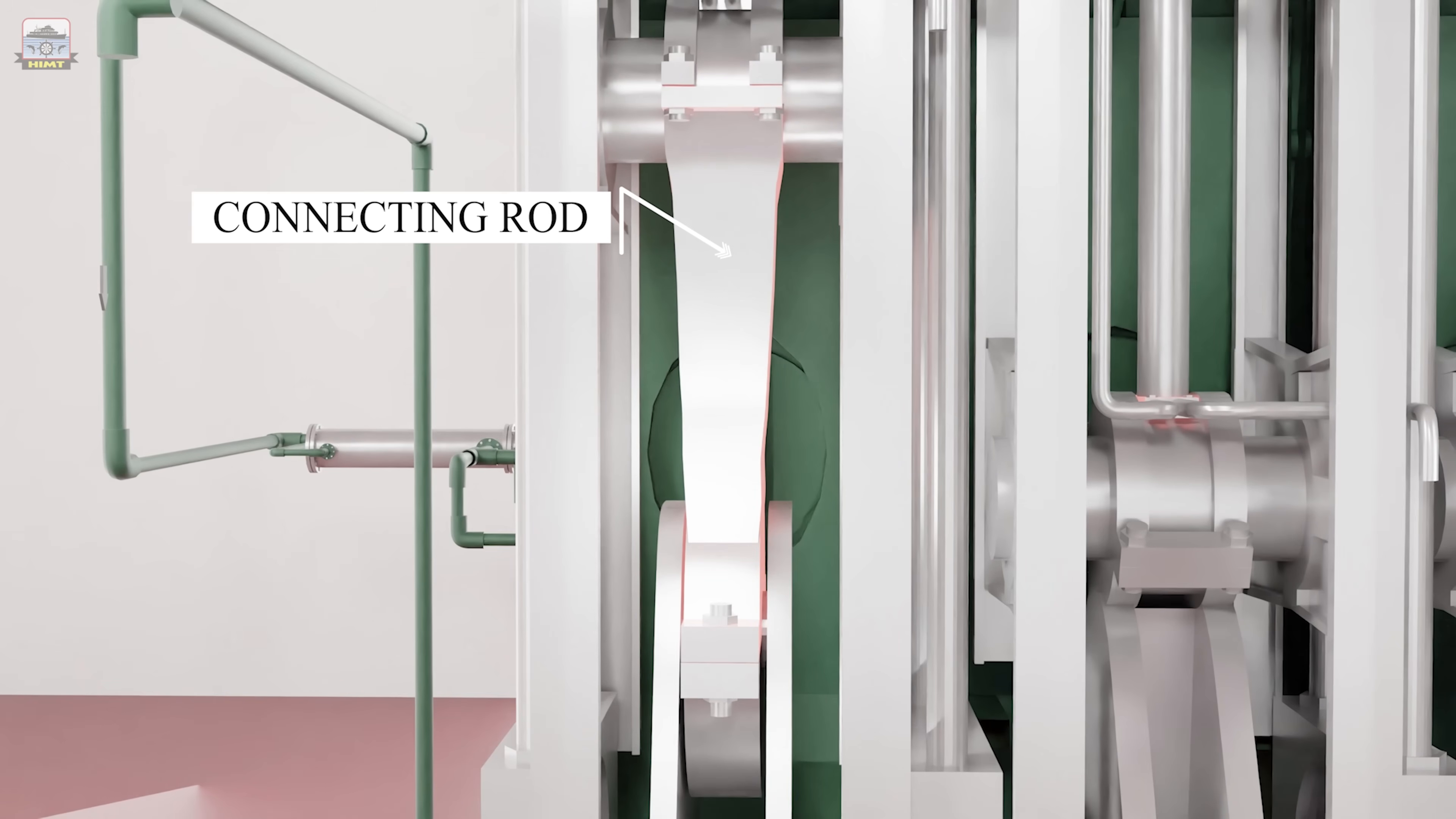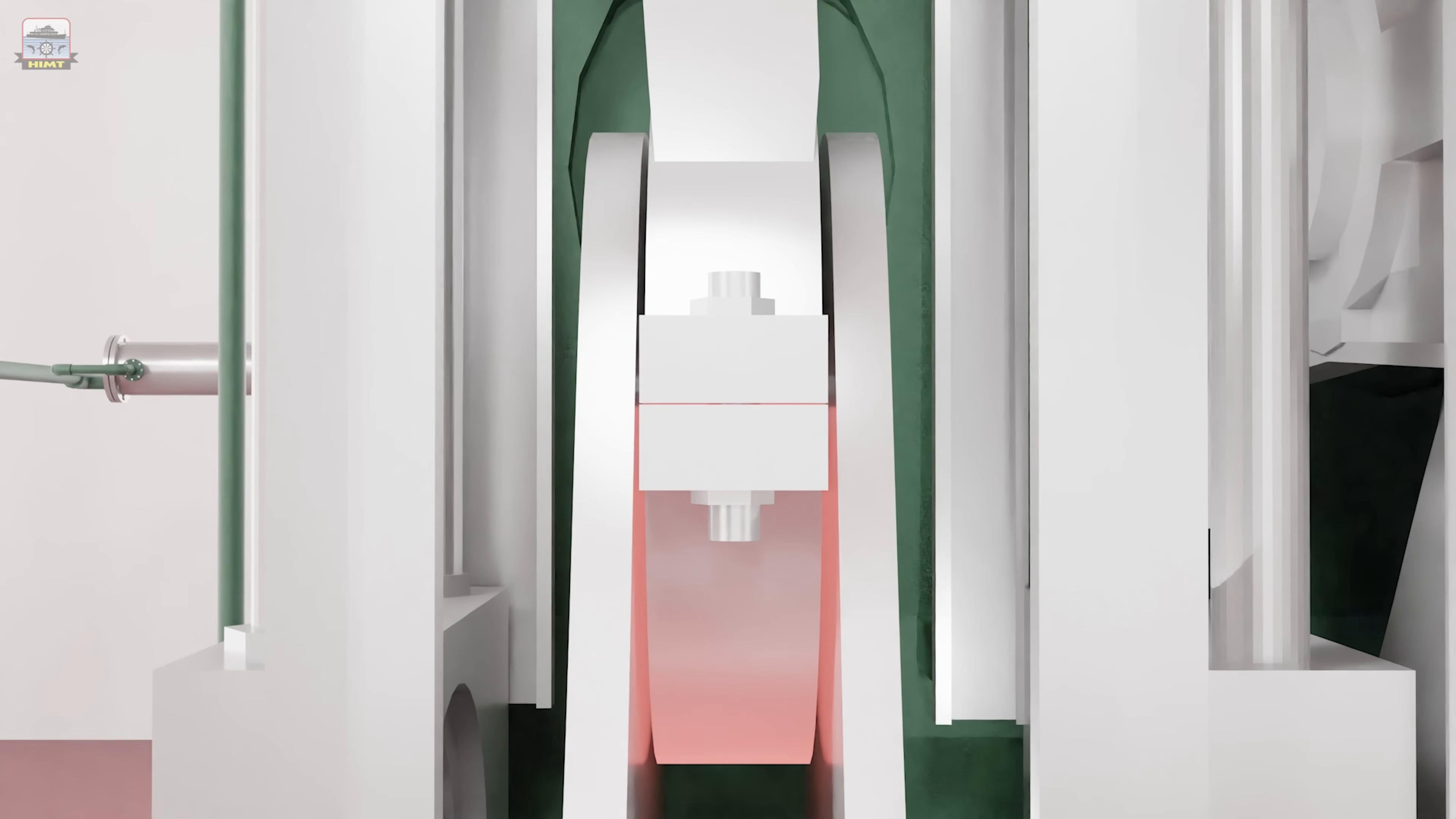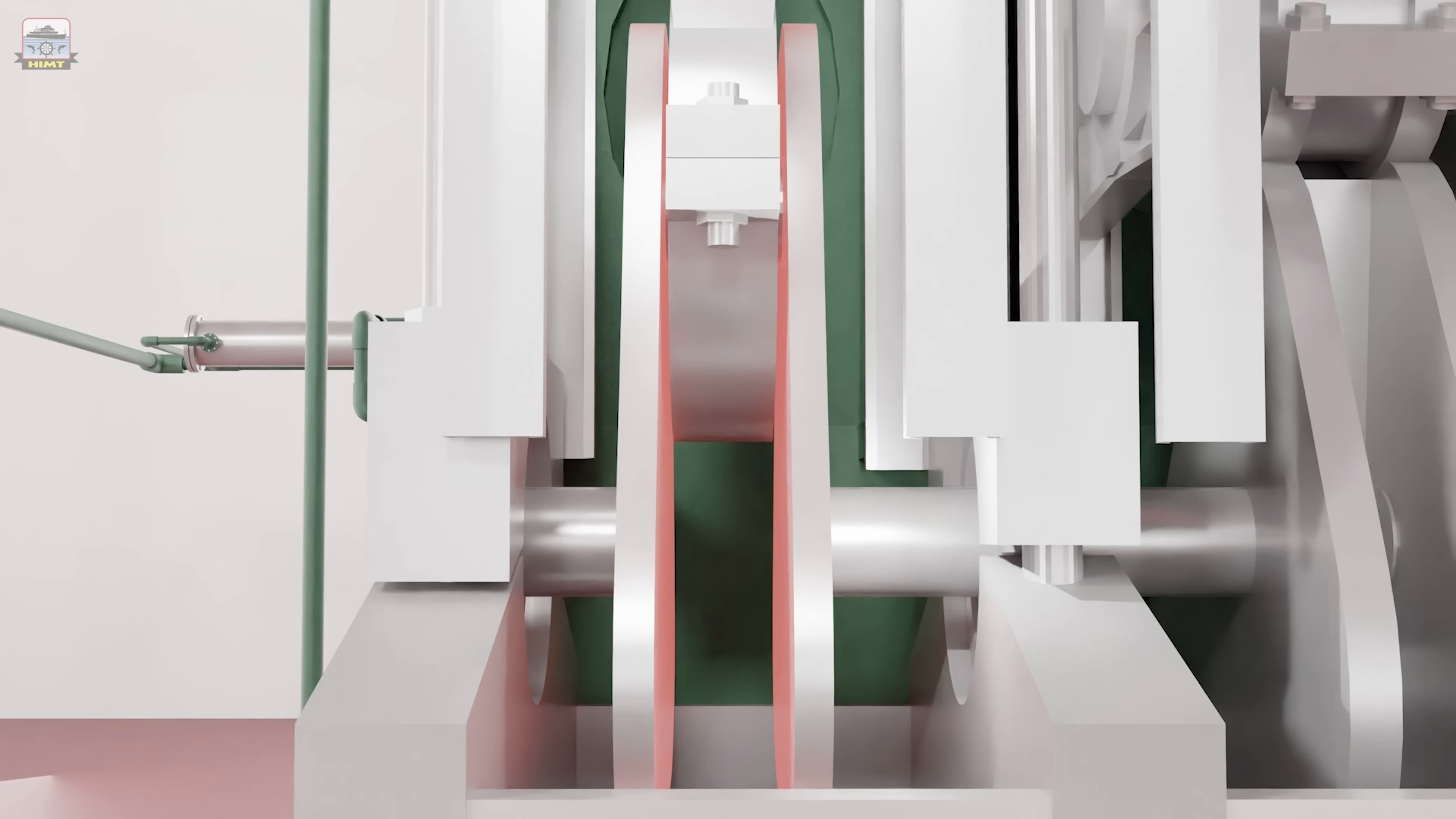The connecting rod is fitted in between the cross-head and the crankpin of the crankshaft. They are shaped at both the ends to accommodate bearings. The connecting rod oscillates and transforms the reciprocating motion of a piston into rotary motion of crankshaft.